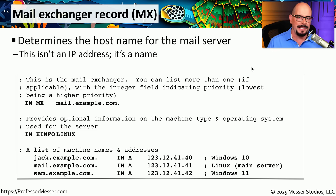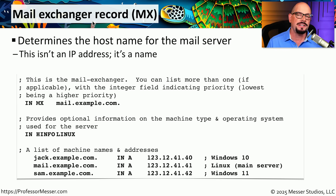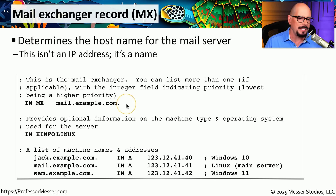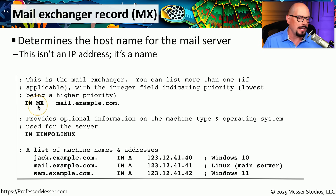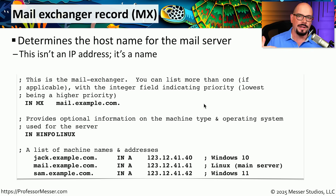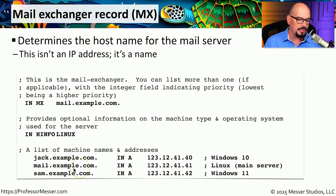One of the most critical records on any DNS server has to be the MX records, which stands for mail exchanger records. These make sure that you're able to both send and receive email messages from your domain. The MX record starts with IN for the internet, MX for the mail exchanger record, and then the name of the mail server — in this case, mail.example.com. When other mail servers need to send an email to james@professormesser.com, they reference the MX record, determine the name of the mail server, then look up the address record to find the IP address — in this case 123.12.41.41.